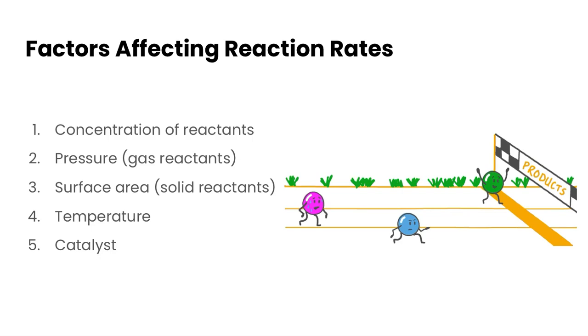In this video we're going to take a look at a variety of factors that can affect reaction rates. Specifically, we're going to look at concentration of reactants, pressure (these pertain just to gas reactants), surface area for solid reactants, temperature, and finally catalysts.